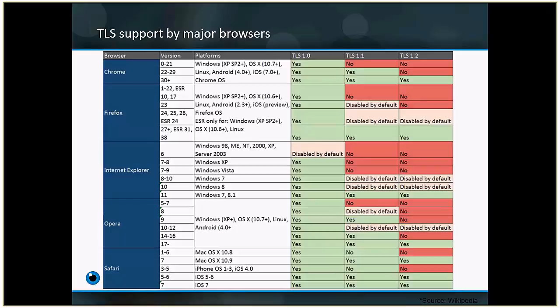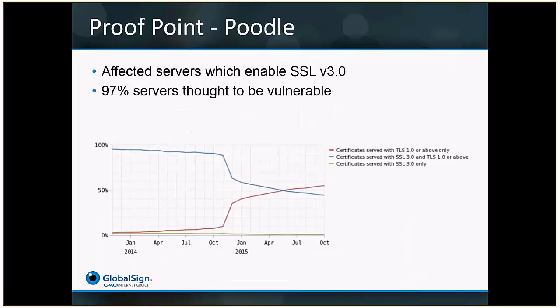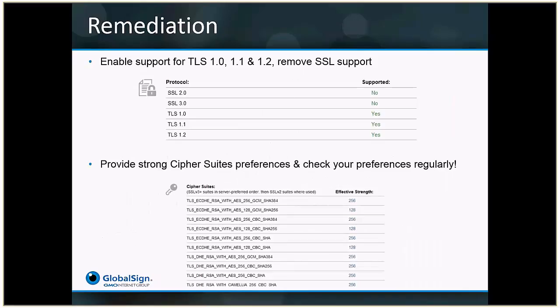Unless you have a closed user group and can say all users are using Chrome version 30 or newer, Firefox 38 or newer, Internet Explorer 11, Opera 17, or Safari 7 — if you're using up-to-date systems, you can safely switch to TLS 1.2. Otherwise, you may want to use TLS 1.0 as legacy support.